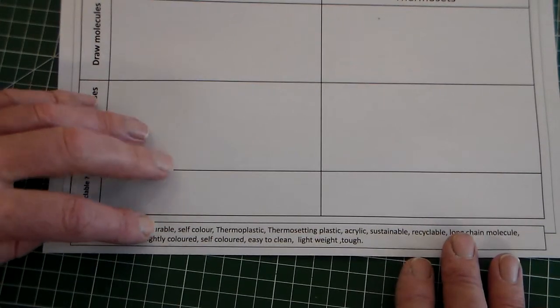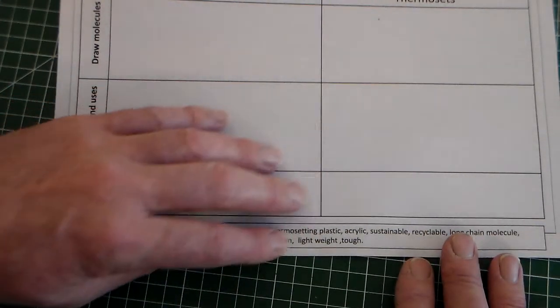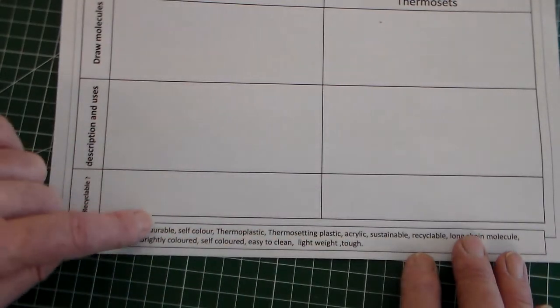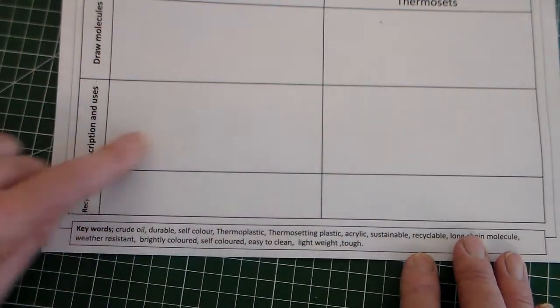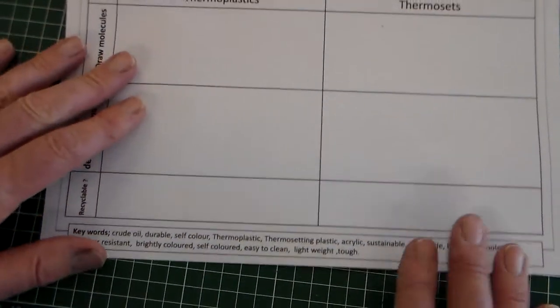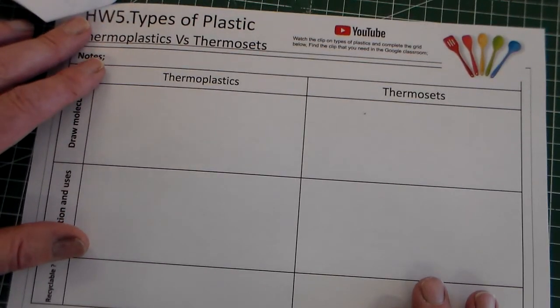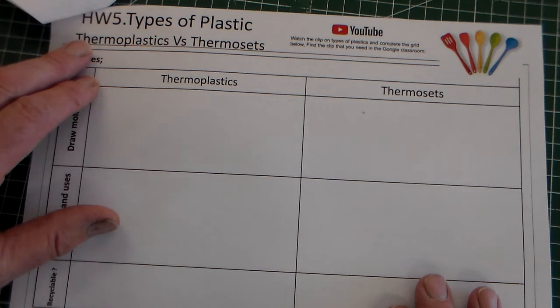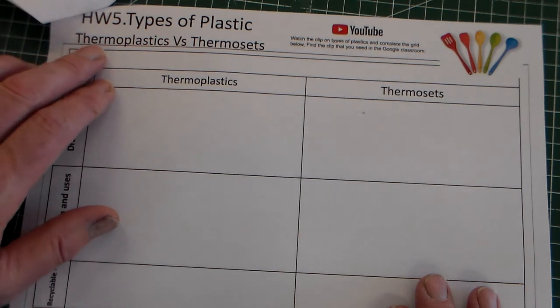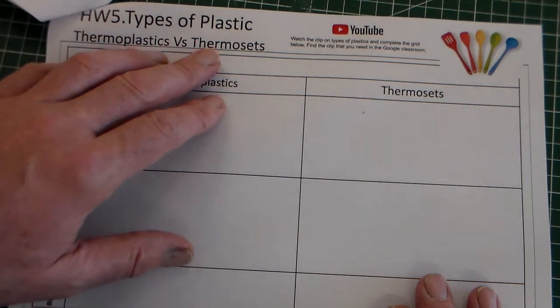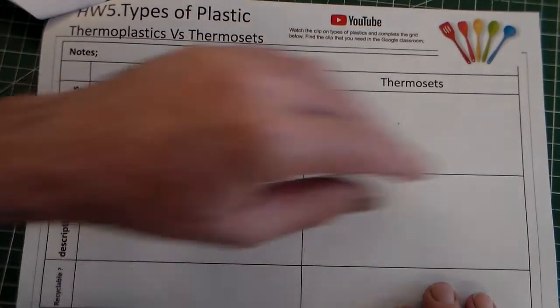Down here we've got a set of keywords which you could use in completing this. We've got crude oil, oil, durable, self-colour, thermoplastic, thermosetting. So these words are words that you might use to fill in, particularly description and uses. So that is homework 5 for the maze game project which is thermoplastics versus thermosets and you need to complete that.